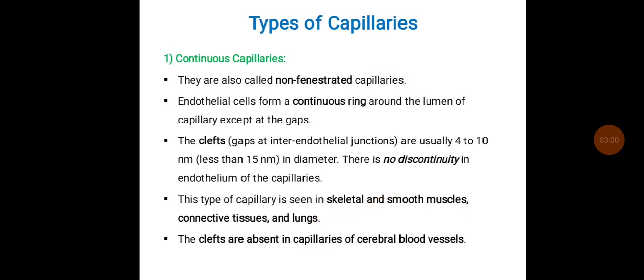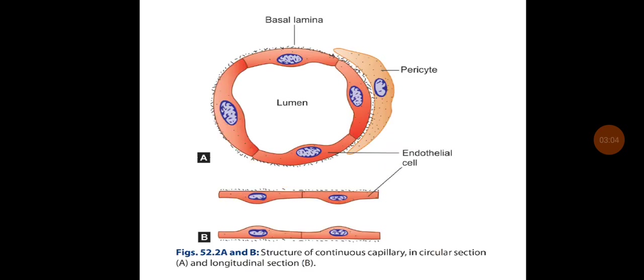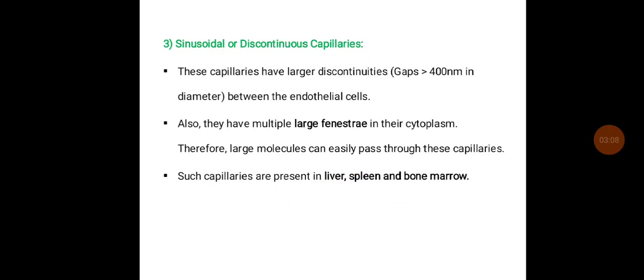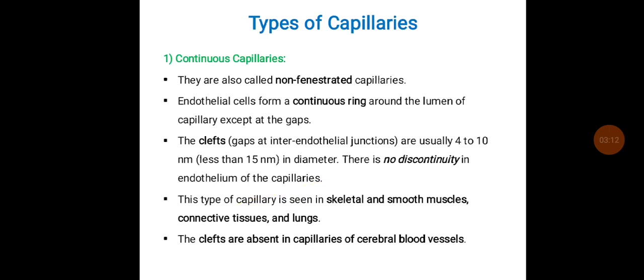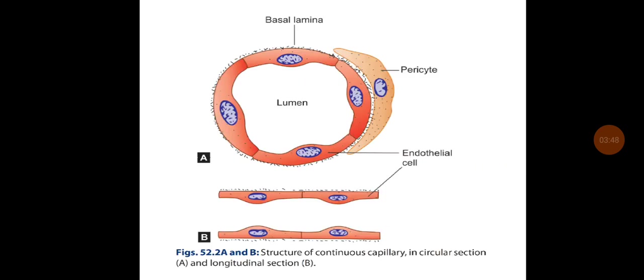There are different types of capillaries: continuous capillaries or fenestrated capillaries. Continuous capillaries are also called non-fenestrated ones. The endothelial cells form a continuous ring around the lumen of the capillary except at the gaps. The clefts are usually around 4 to 10 nanometers, and there is no discontinuity, as the name suggests. This type of capillary is seen in skeletal muscle, smooth muscle, connective tissues, and lungs. The clefts are absent in capillaries of cerebral vessels.